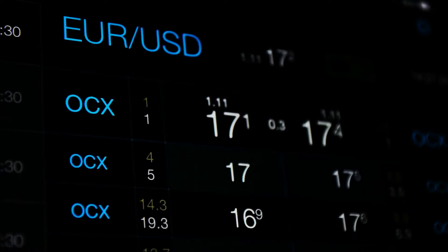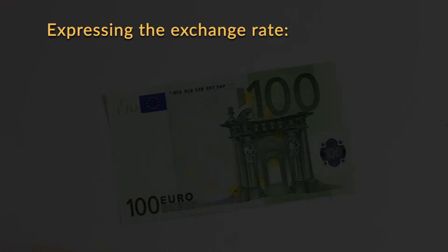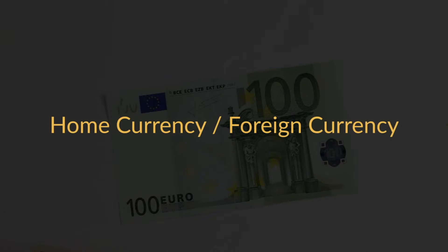Let's start with the basics. The exchange rate is the price of one currency expressed in that of another currency. This means that it can be expressed in two ways. For example, you can say that since a South African rand gets you 0.056 euro, the rand over euro exchange rate is 0.056. Or you can say that since one euro gets you 17.88 rands, the euro over rand exchange rate is 17.88. There is a standard for this: people should express the exchange rate such that it indicates how much foreign currency they can buy with their home currency.